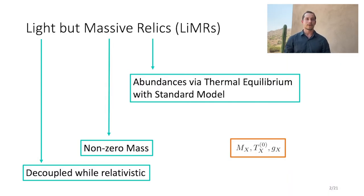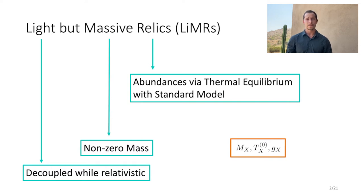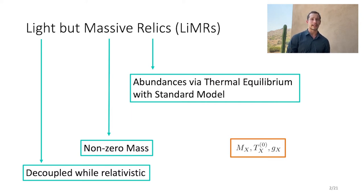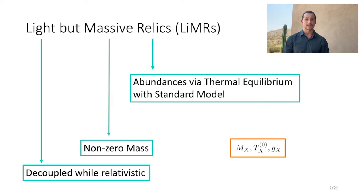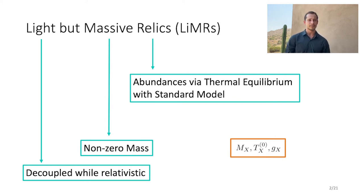Let me start by describing exactly what I mean when I say light but massive relics. Moving from right to left: 'relics' refers to thermal relics whose initial abundances were produced via thermal equilibrium with the standard model at early times. We are interested in thermal relics with a non-zero mass, and 'light' refers to these thermal relics being sufficiently low in mass such that they are relativistic when they decouple from the standard model. Later in this talk, light but massive relics may be referred to by their acronym, LEMUR.